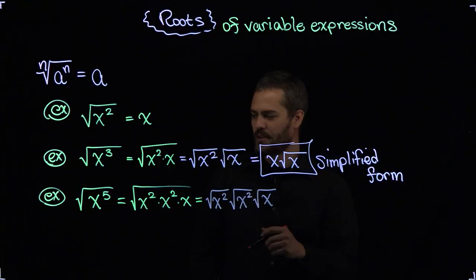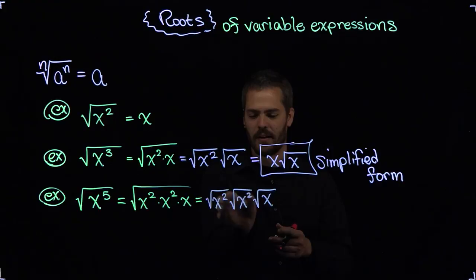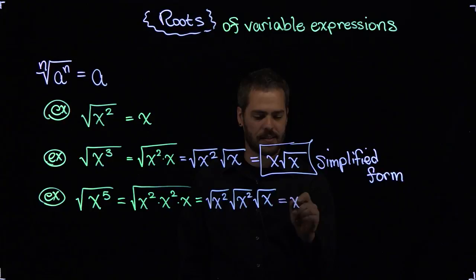Now you'll notice that with the square root in particular, every time I have an even power here to begin with, I'm going to come up with an exact number of roots of x squared. If I have an odd power, then I'm going to end up with something like this, just the root of x by itself. So let me continue.